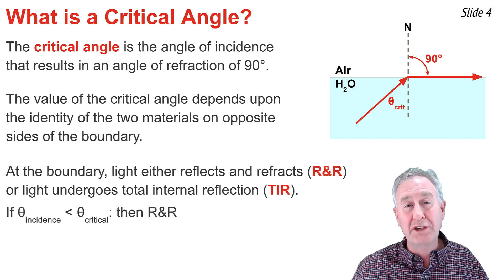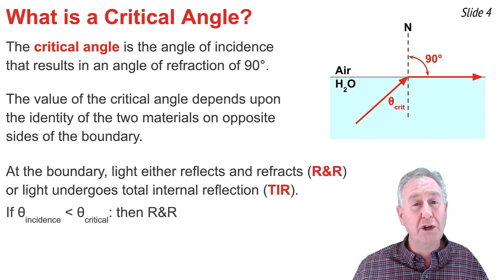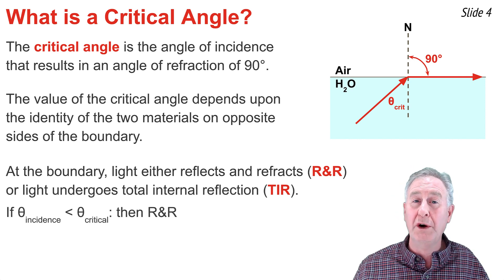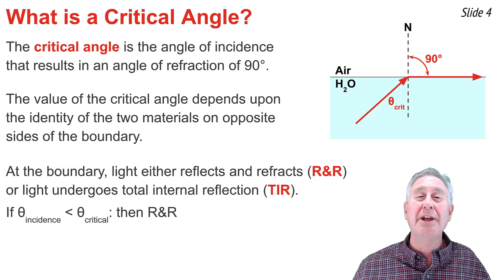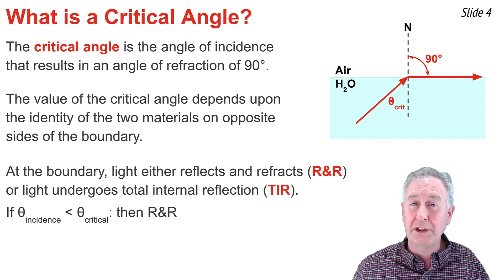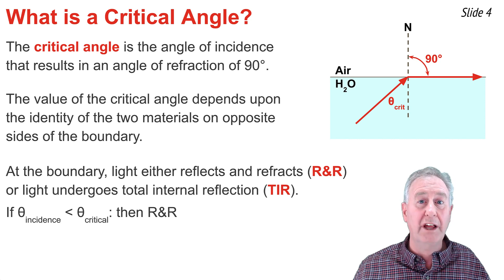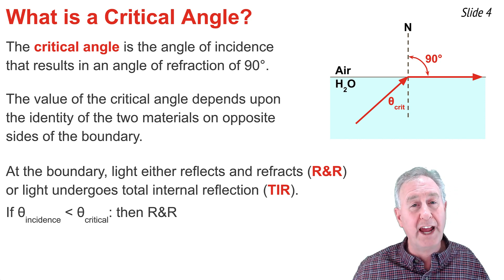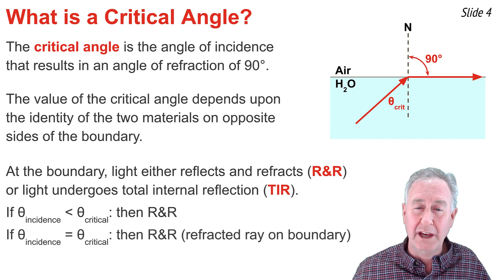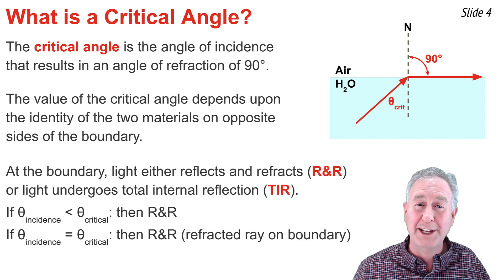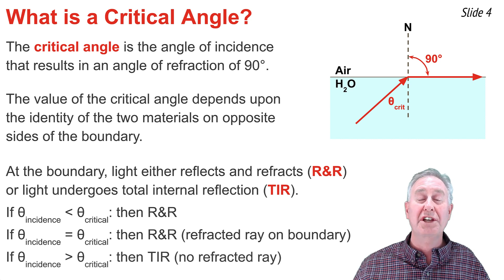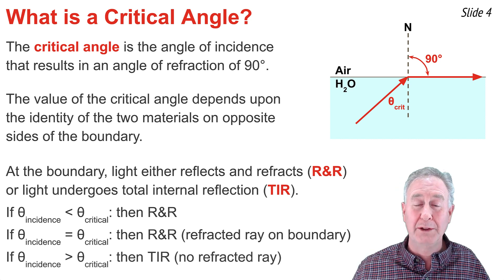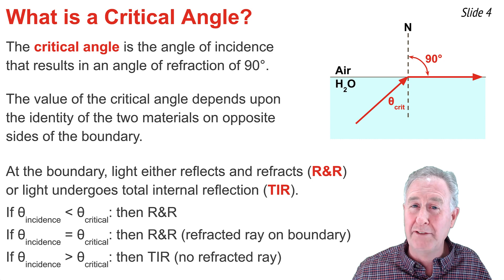If the angle of incidence is less than the critical angle, the light will undergo both reflection and refraction. If the angle of incidence is equal to the critical angle, the light will also reflect and refract — but this is the special case where the refracted ray travels along the boundary line. When the angle of incidence is greater than the critical angle, there will be no refraction whatsoever; the light will instead undergo total internal reflection.